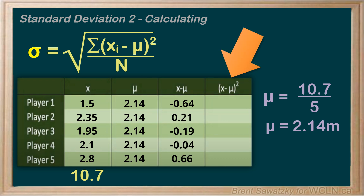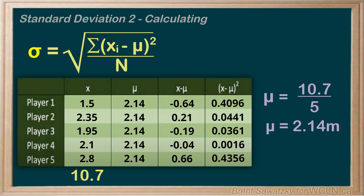Lastly, we get to column four — all we have to do is square each of the items in column three. For example, for row one, negative 0.64 squared: the negative disappears — negative times negative is positive — and we get 0.4096. We do the same thing for all the other rows.